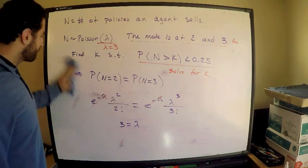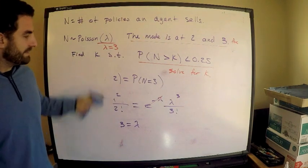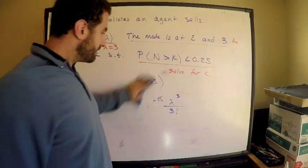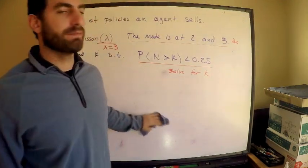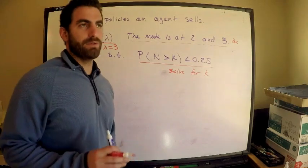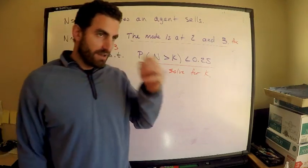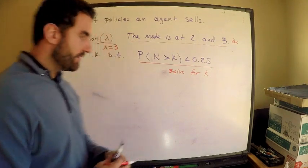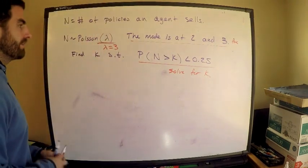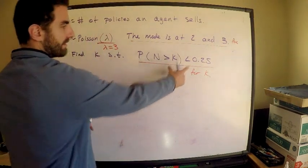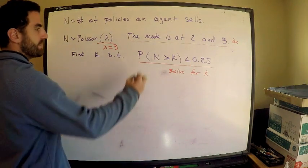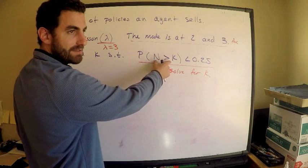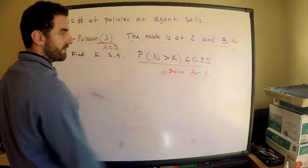This technique comes up frequently — I've had to use it for exam P and also for exam FM. Now let's write the inequality. The left-hand side is an infinite sum, which is inconvenient, so let's compute the complement instead. We know that P(N > K) < 0.25.